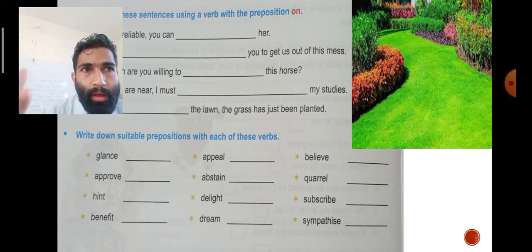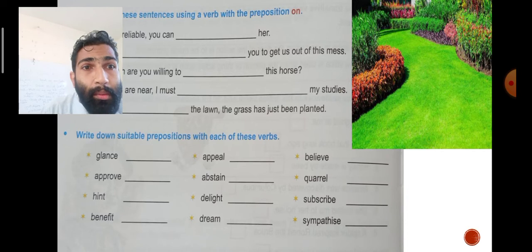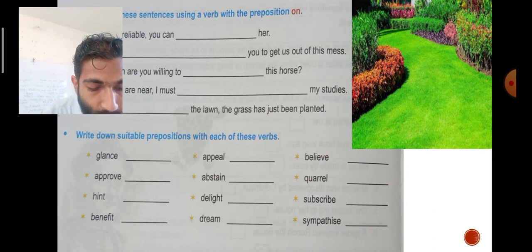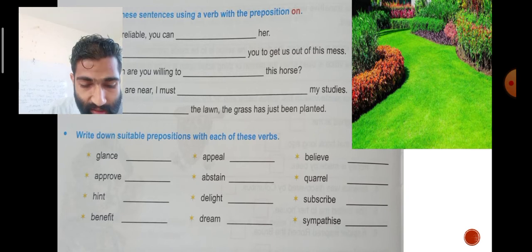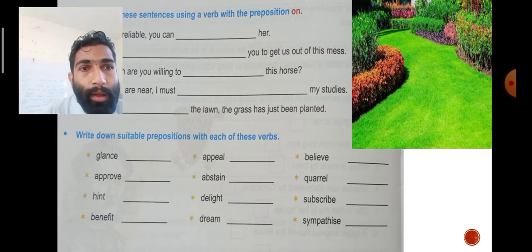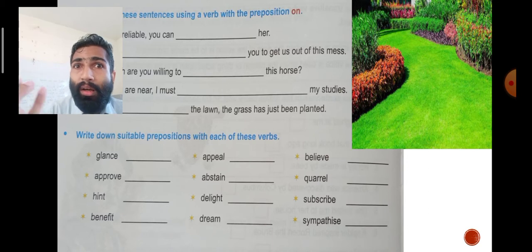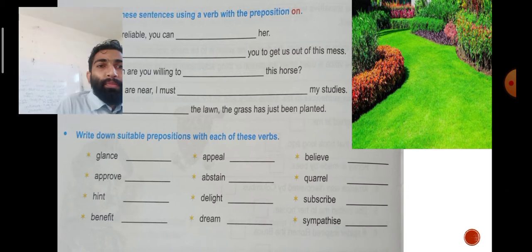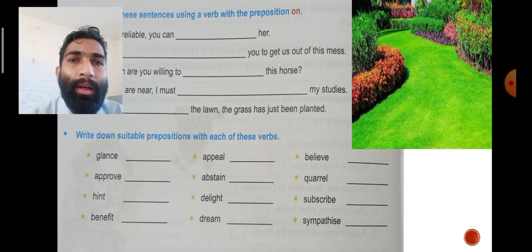Believe you know. Approve means accept or agree. Quarrel means fight. Hint means clue. Delight means pleasure or happiness. Subscribe—you know, like YouTube channels. Benefit means a good result. Dream you know. Sympathize means feeling sympathy.